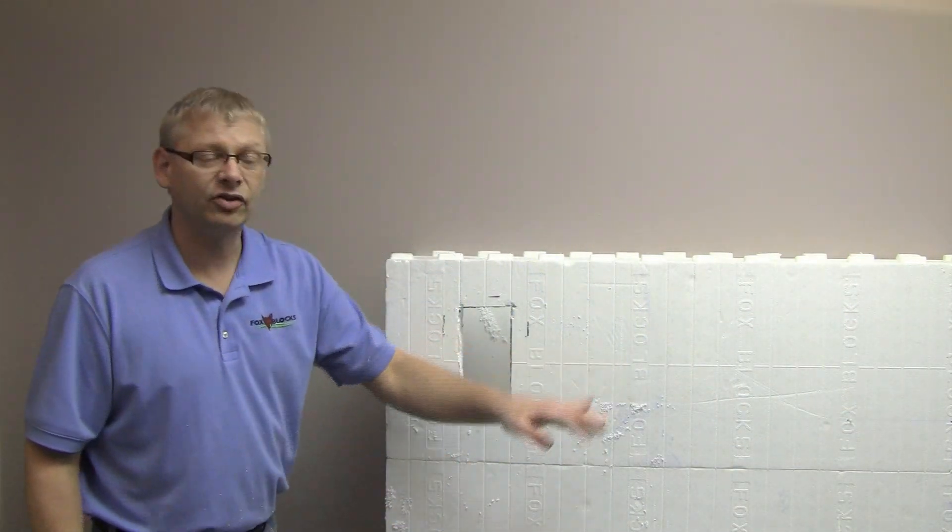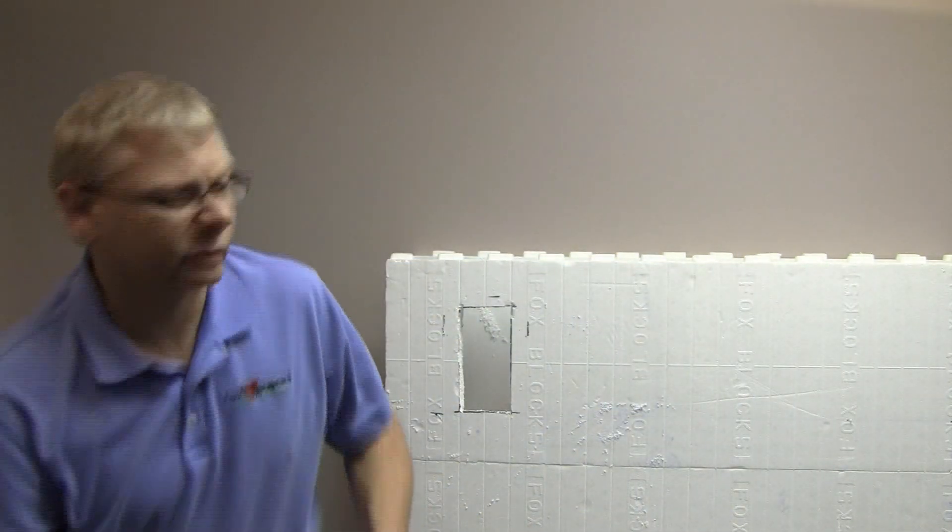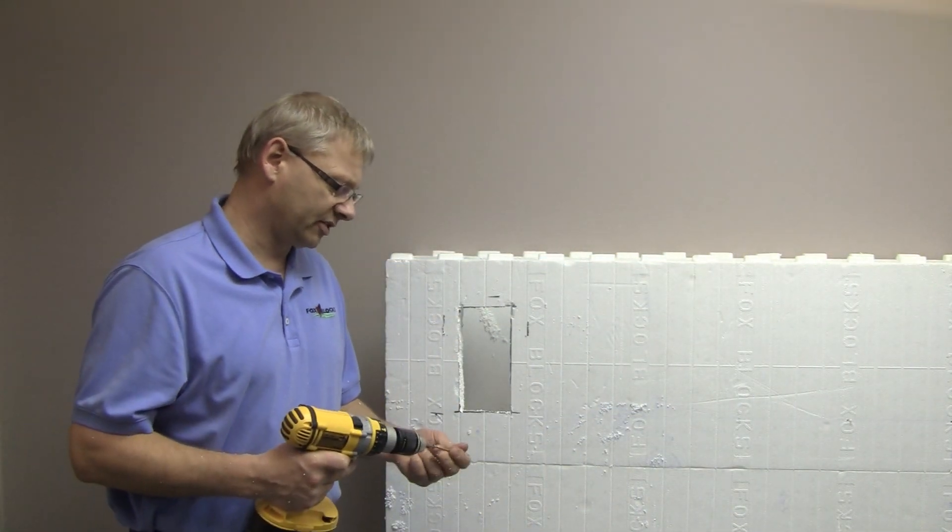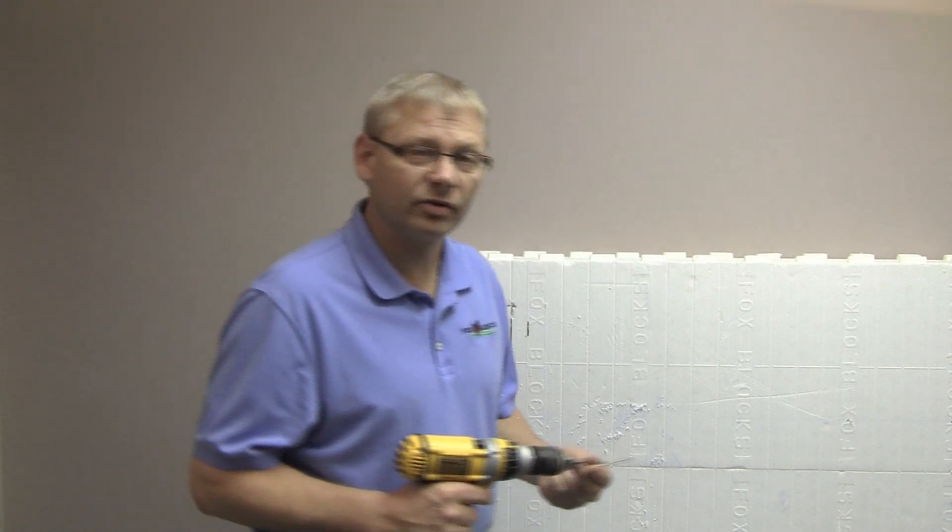Now I need to put my 2x10 up. I'm here all by myself. So I'm going to use these, just a simple deck screw. They call these a low root screw, but a deck screw, you can find them just about anywhere. And I'm just putting a couple of these deck screws in.